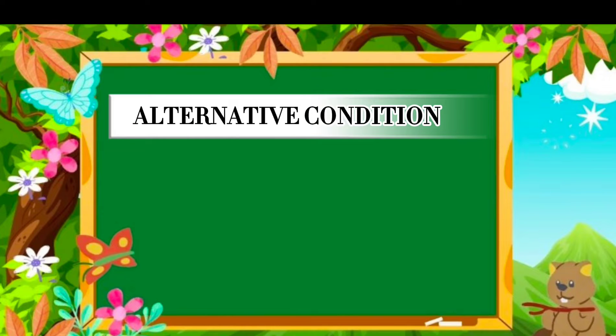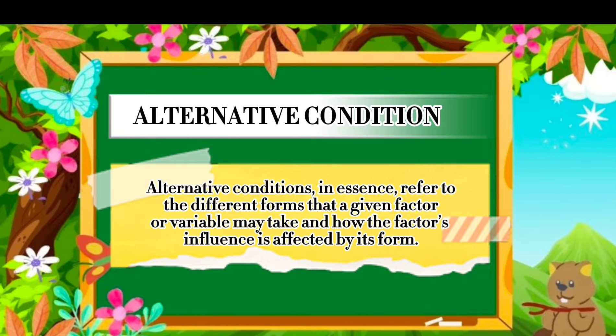Alternative condition. The researcher should also be aware of the possibility of alternative conditions that might make the occurrence of a certain phenomenon more likely. Alternative conditions, in essence, refer to the different forms that a given factor or variable may take and how the factor's influence is affected by its form.